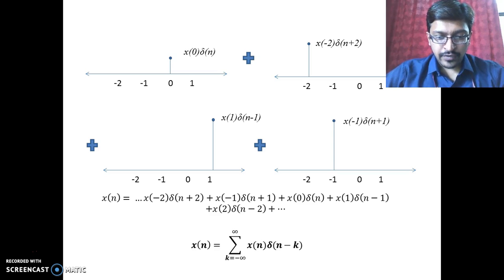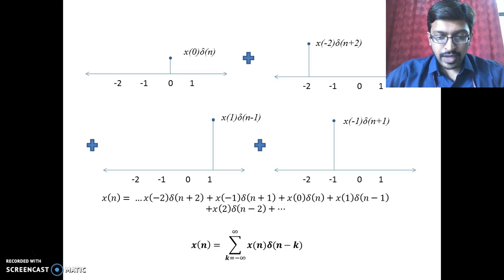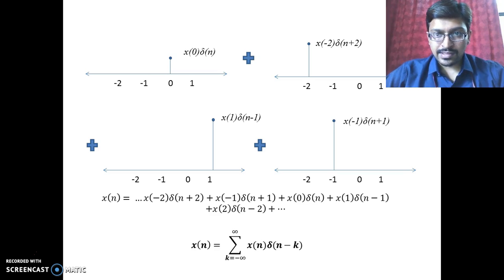More generally, we can write the equation as x(n) = Σ(k = -∞ to +∞) x(k)·δ(n−k). This is the equation by which we can construct any discrete-time signal x(n) with the help of shifted and scaled impulse sequences.